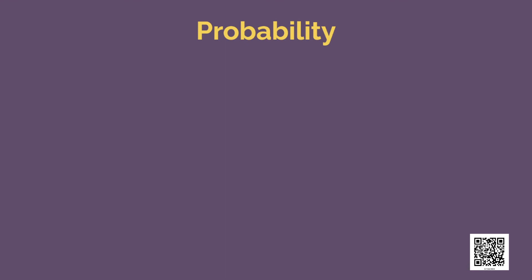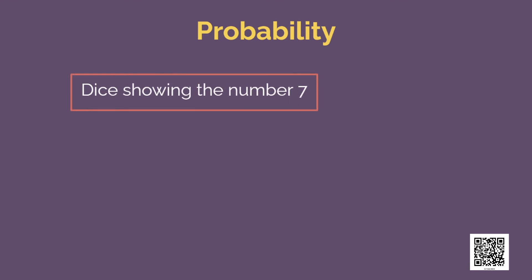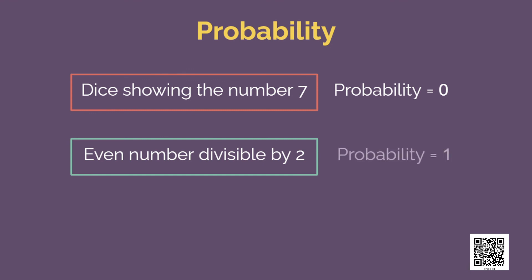We give probabilities to events from values 0 to 1. The probability of an event is 0 if there is no chance of it occurring. For example, the probability of a dice showing the number 7 is 0 because it is not possible. And the probability that an even number is divisible by 2 is 1, because all even numbers are divisible by 2 — this is always true. For events guaranteed or certain to happen, we say the probability is 1. For events that are never possible, the probability is 0. Try to think of some more events with probabilities 0 and 1.